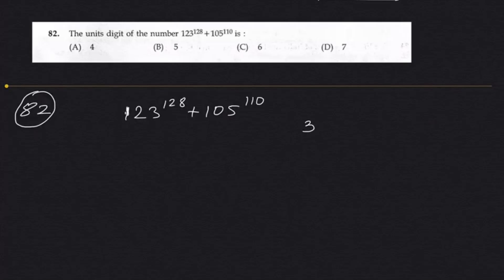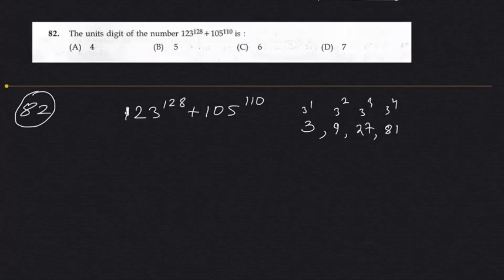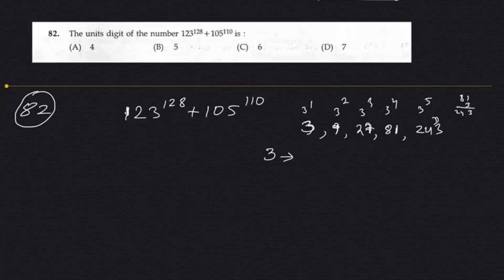First understand a simple concept about unit digits. For the digit 3: 3 power 1 is 3, 3 power 2 is 9, 3 power 3 is 27 (unit digit 7), 3 power 4 is 81 (unit digit 1), 3 power 5 is 81 into 3 = 243 (unit digit 3). So the unit digits of powers of 3 cycle as 3, 9, 7, 1, then back to 3, 9, 7, 1.